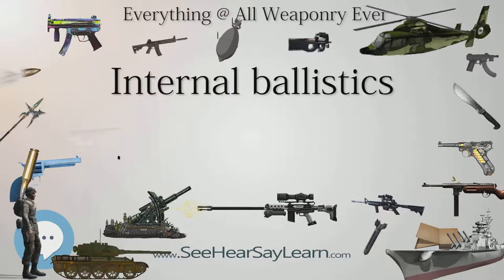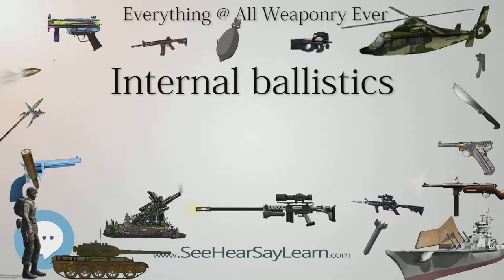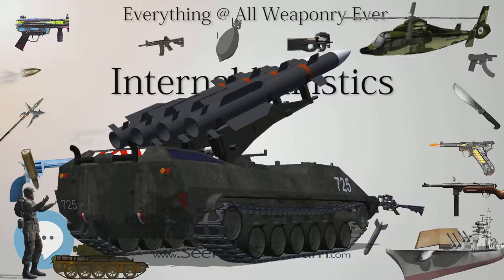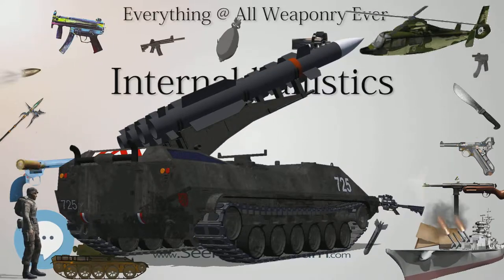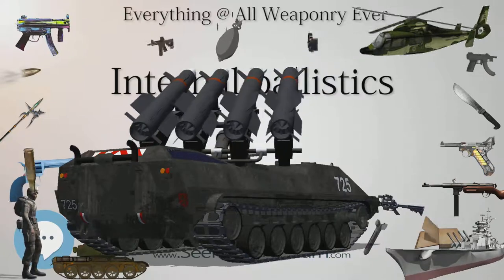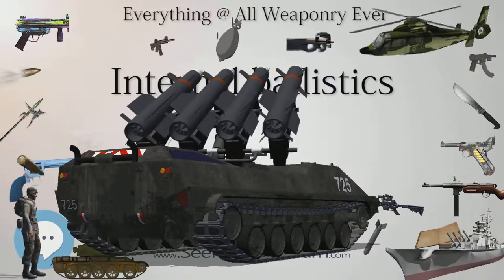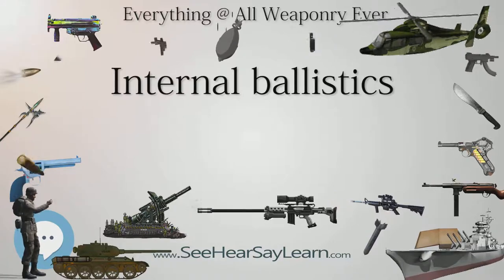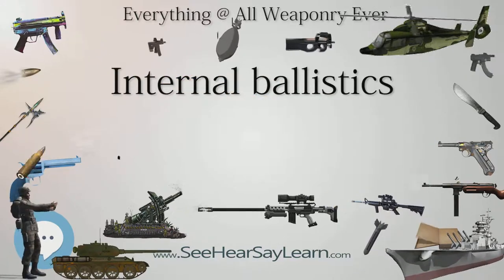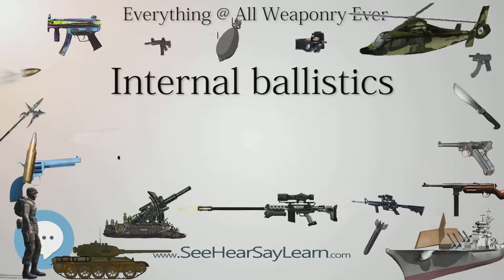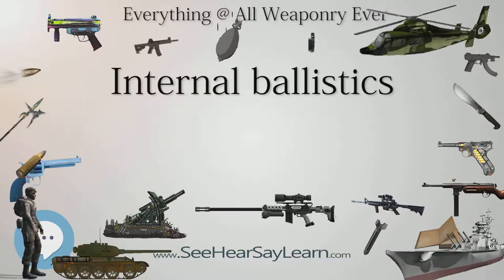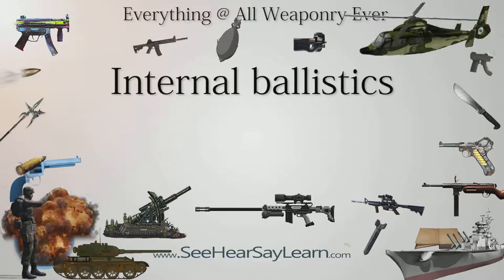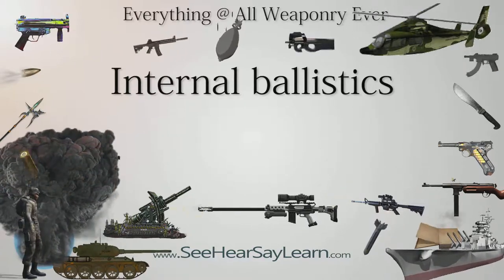The swept volume of the piston determines how much energy can be extracted from the given gas. The more volume swept by the piston, the lower the exhaust pressure — in this case, the muzzle pressure. Any remaining pressure at the muzzle represents lost energy. To extract the maximum amount of energy, the swept volume is maximized — either by increasing the length of the barrel or increasing the diameter of the projectile. Increasing the barrel length will increase the swept volume linearly, while increasing the diameter will increase the swept volume as the square of the diameter.